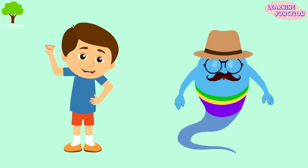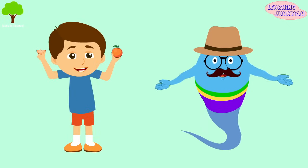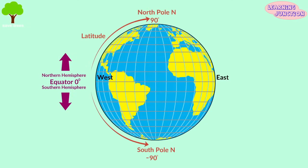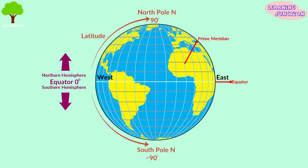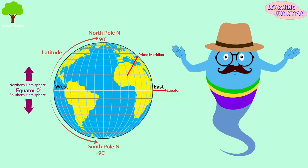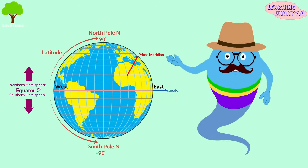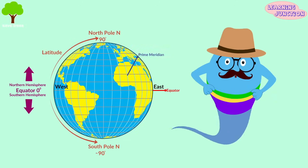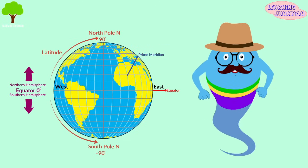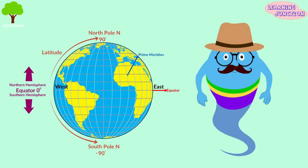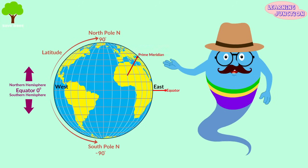Now we'll see some of the notable latitudes and longitudes. The most important of these are the equator and the prime meridian. The equator is a line passing through the center of the Earth and is considered as the reference point for latitudes, whereas the prime meridian is a line passing through Greenwich, England and is considered as the reference point for longitudes.